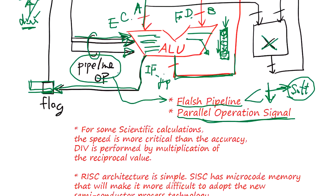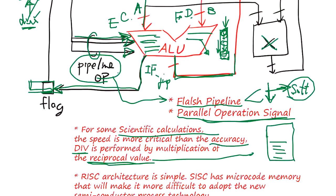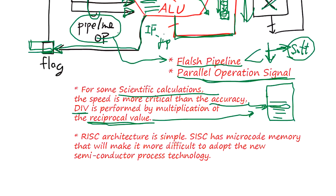So some scientific calculations, speed is more critical than accuracy. So often the divide is performed by the multiplication of the reciprocal value. How do you get the reciprocal value? It's a table lookup. In the memory, you keep the reciprocal value, right? And in order to do the division, you just go get the reciprocal value and go through multiplier. Boom. It's very fast. This kind of technique is also used and that can be done by software level.